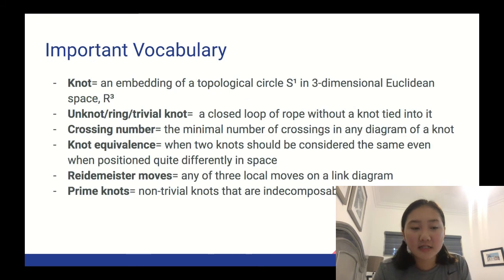Here, I've listed some important vocabulary terms concerning knot theory. A knot is an embedding of a topological circle S1 in 3-dimensional Euclidean space R3. An unknot, or ring, or trivial knot, which are all the same thing, is a closed loop of rope without a knot tied into it.